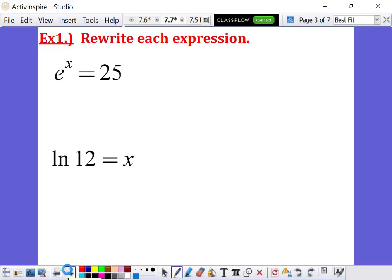So here's our first example. Example one, rewrite each expression. So we see the first one is E to the X equals 25, and we know that we're going to rewrite this as a log function. So what you would do up to this point is you would say log base E of 25 equals X. But here's the catch with natural logs, or logs base E. Whenever you have E as the base, that's actually called a natural log.